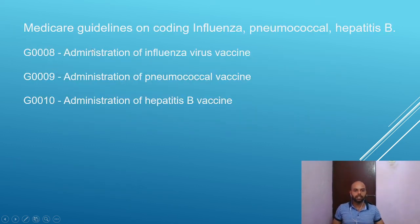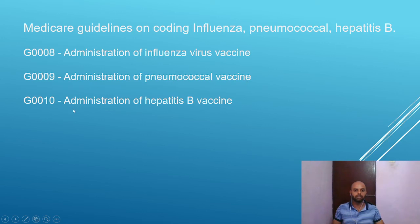Medicare has different guidelines on billing administration for influenza, pneumococcal, and hepatitis B. Whenever you're billing for these administrations, bill G0008 for administration of influenza virus vaccine, G0009 for administration of pneumococcal vaccine, and G0010 for administration of hepatitis B vaccine. Not only Medicare — some Medicare managed care plans also follow the same guidelines. So whenever you're billing administration of these three, always check with the payer.